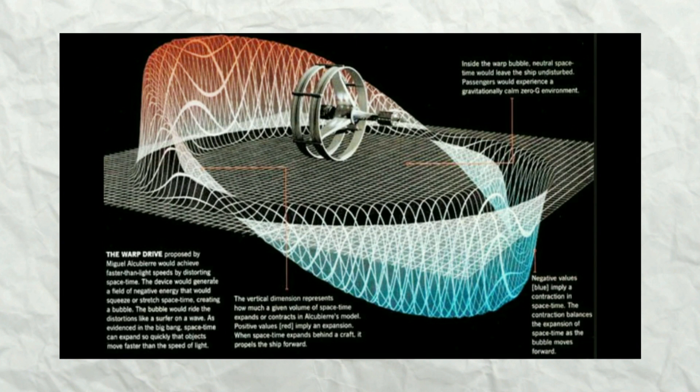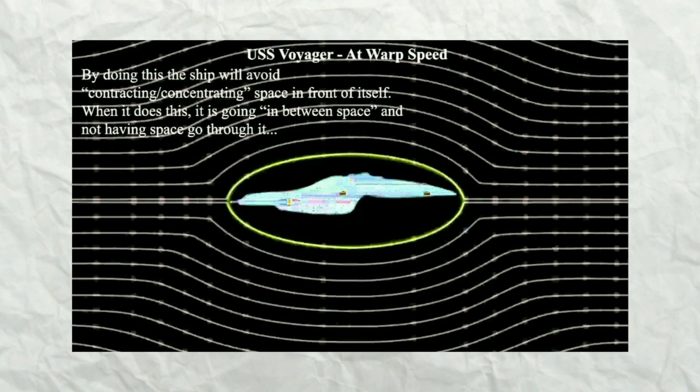In theory, in its simplest form, this form of space travel involves stretching the fabric of spacetime in a wave which would in theory cause the space ahead of an object to contract while the space behind it to expand. An object inside the wave, that is a spaceship, would then be able to ride this region known as the warp bubble of flat space.